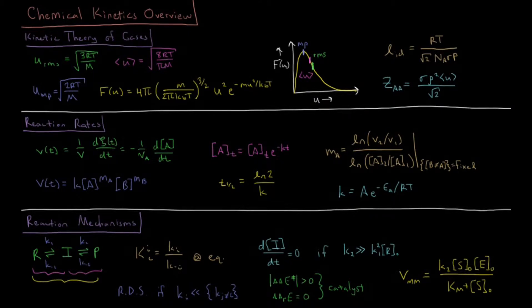This video is an overview of the chemical kinetics playlist. We start off with the kinetic theory of gases where we derive the average velocity of a gas particle based off of its collisions with an individual container wall.